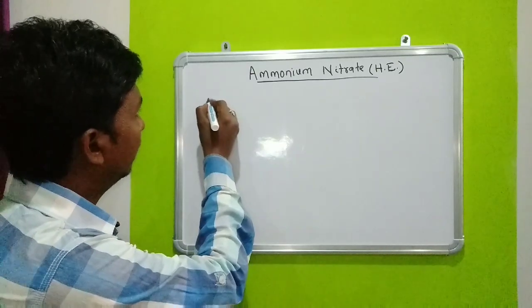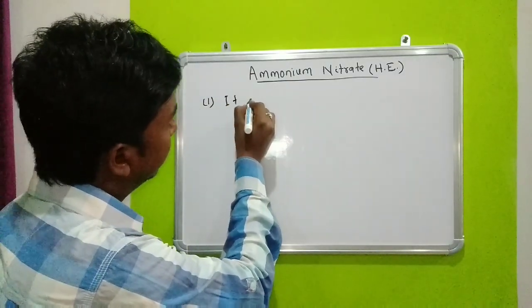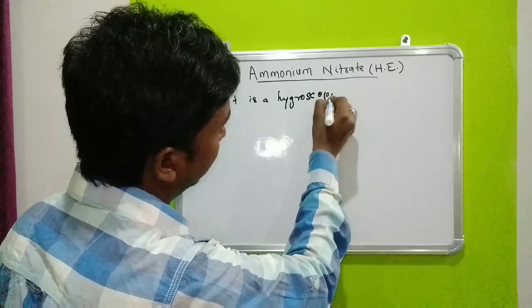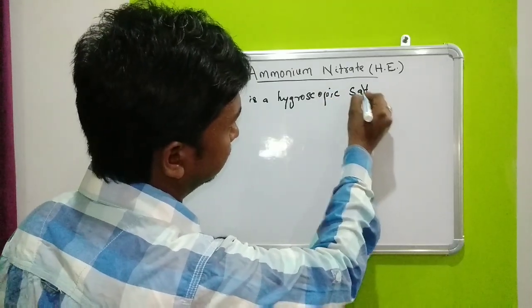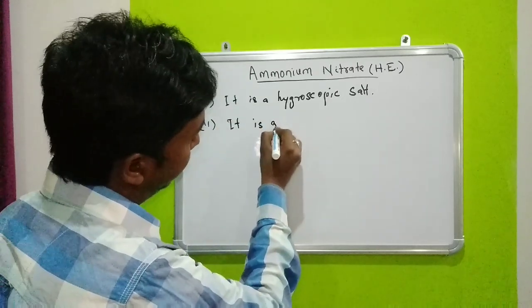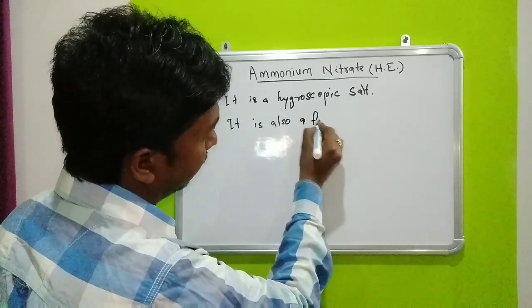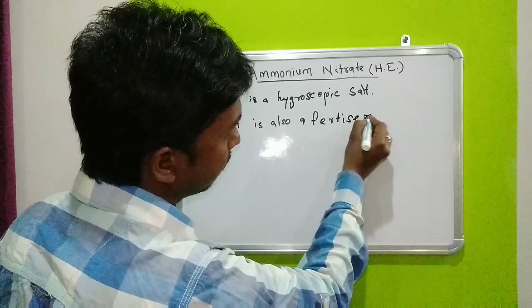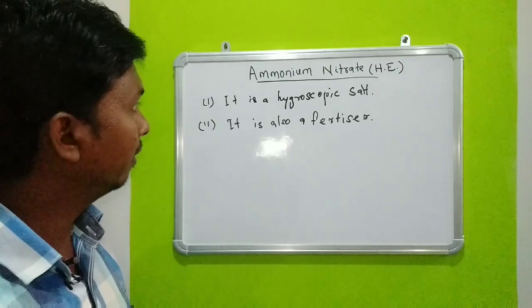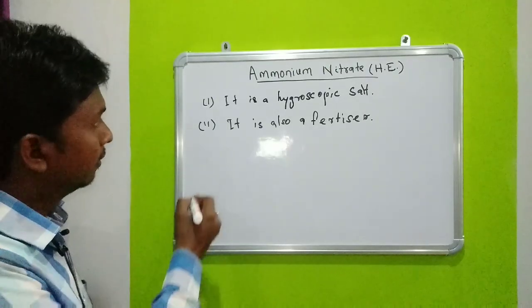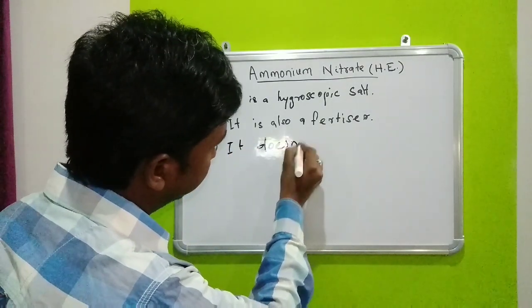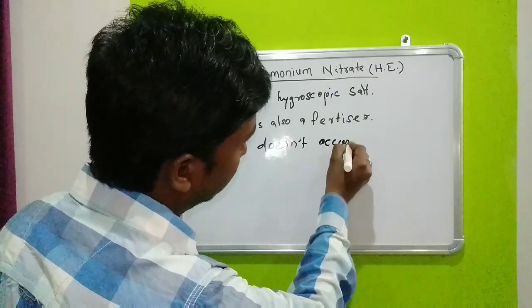Ammonium nitrate is a hygroscopic substance. It is also a fertilizer, which you may have seen in agricultural land. It does not occur in nature.